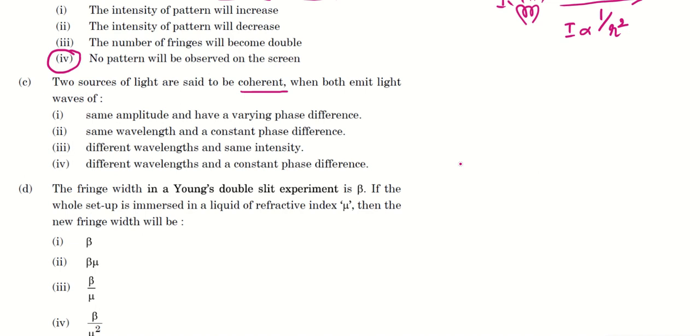If these two sources are coherent, we know the phase difference should not change with time. So which means a constant phase difference. But what about, so constant phase difference is there in the two options here, but there are two options.